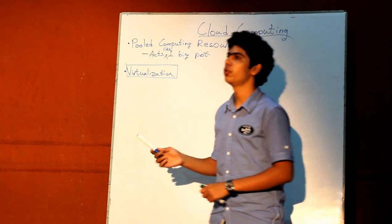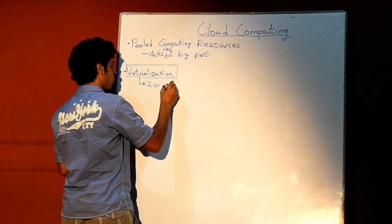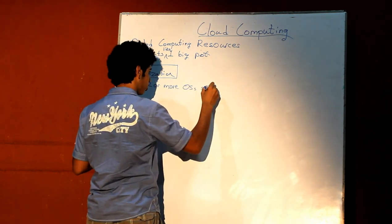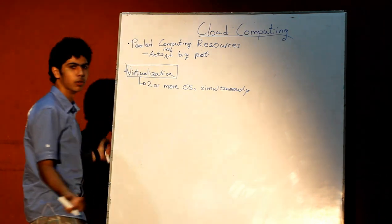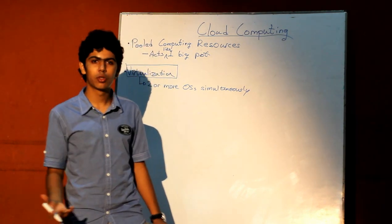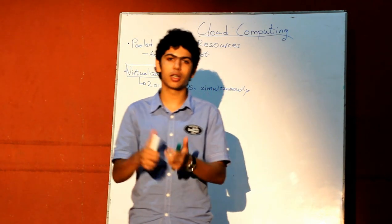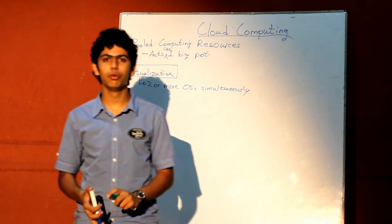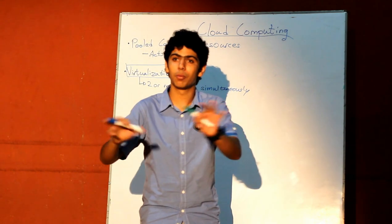Virtualization is essentially where you can run two or more operating systems simultaneously. The most common example would be Windows. What this allows you to do is use powerful hardware to its maximum potential. At the same time, you can have more than one person use the same set of hardware or resources for completely different tasks and in complete isolation from the others.